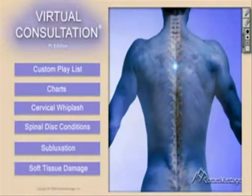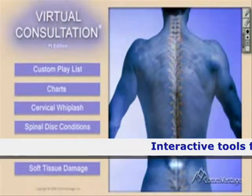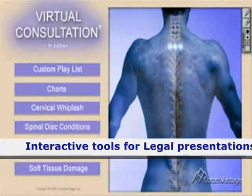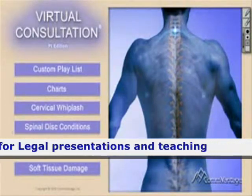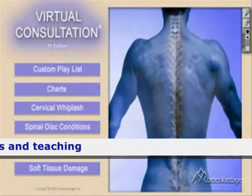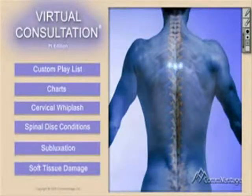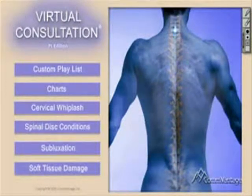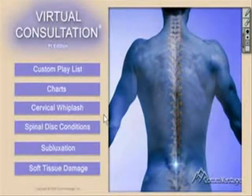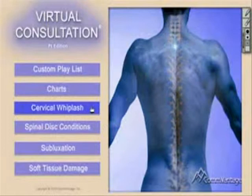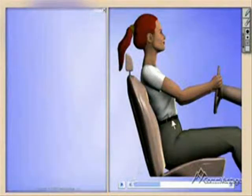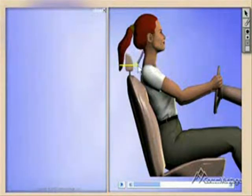The Virtual Consultation Personal Injury Version is designed to enable both doctors and legal professionals to easily explain the impact of automobile accidents. Our 3D models are accurate, easy to use, and developed in accordance with the best research and textbook materials available. Let's take a minute to review a few features in Virtual Consultation PI. A great place to start is the cervical whiplash feature.